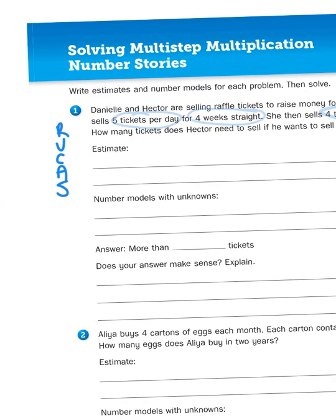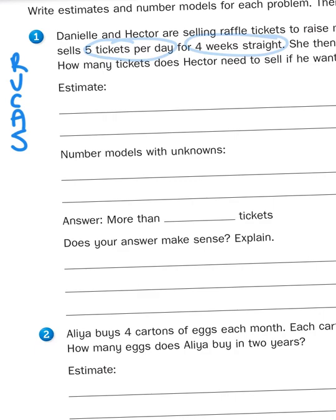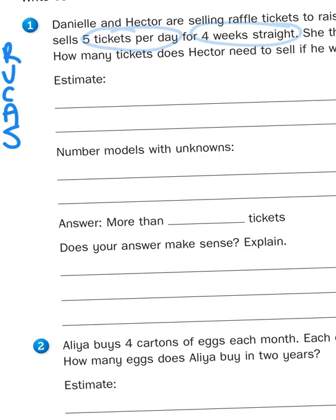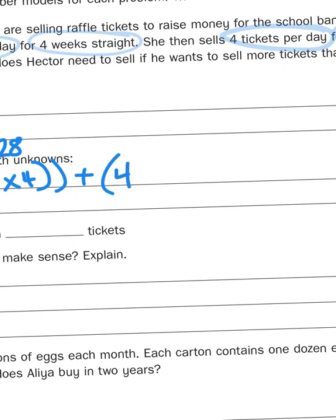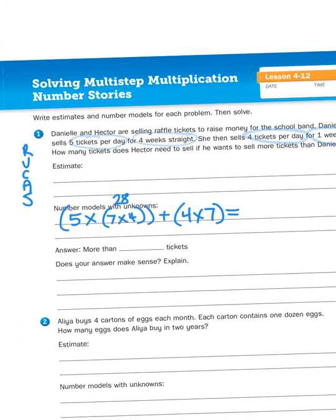So five tickets per day times four weeks. Four weeks is seven days a week times four, which we know to be 28. And then I'm going to add that to the last week where she sold four tickets a day for one week, four times seven. So five tickets per day for four weeks straight plus four tickets a day for another week. Five times 28 plus 28.